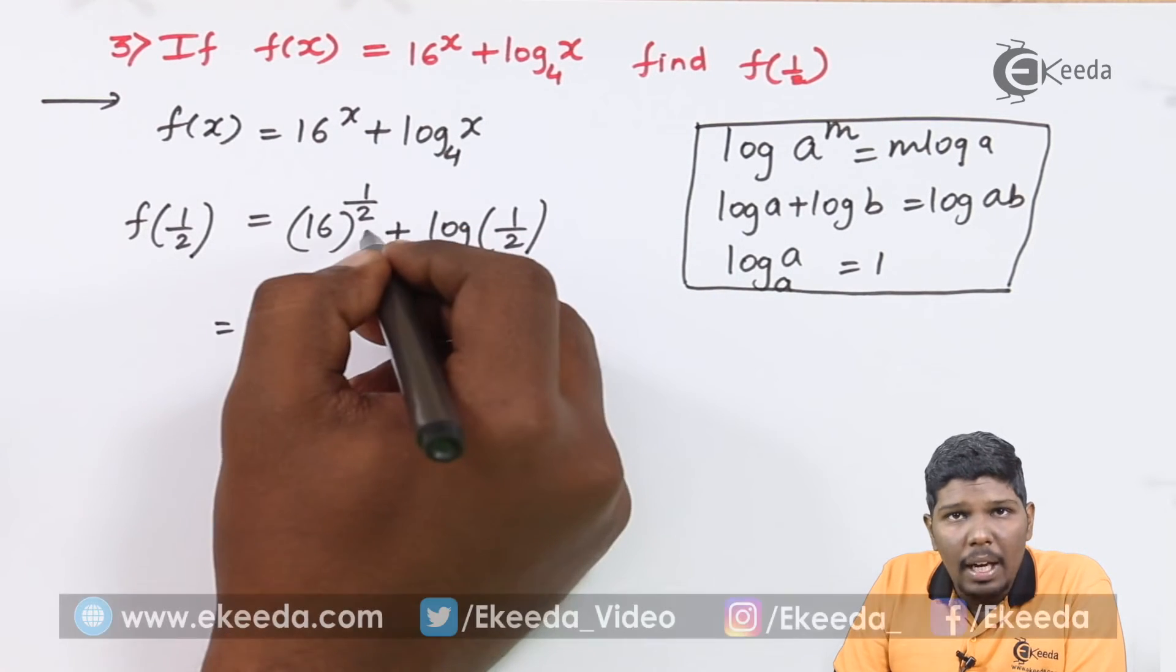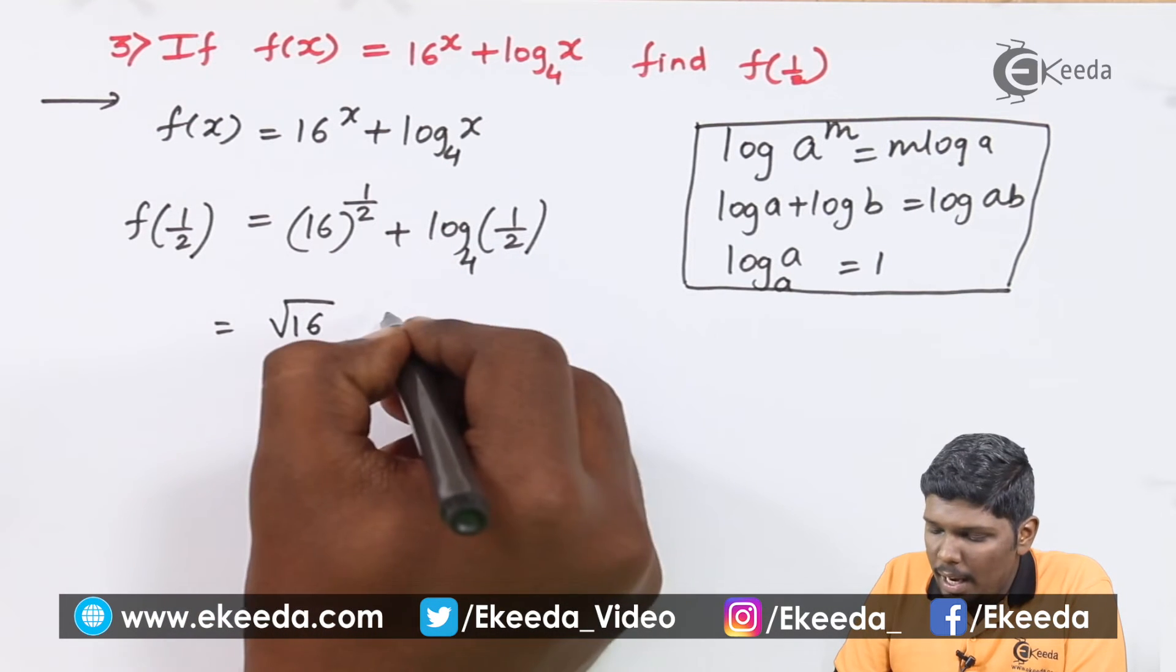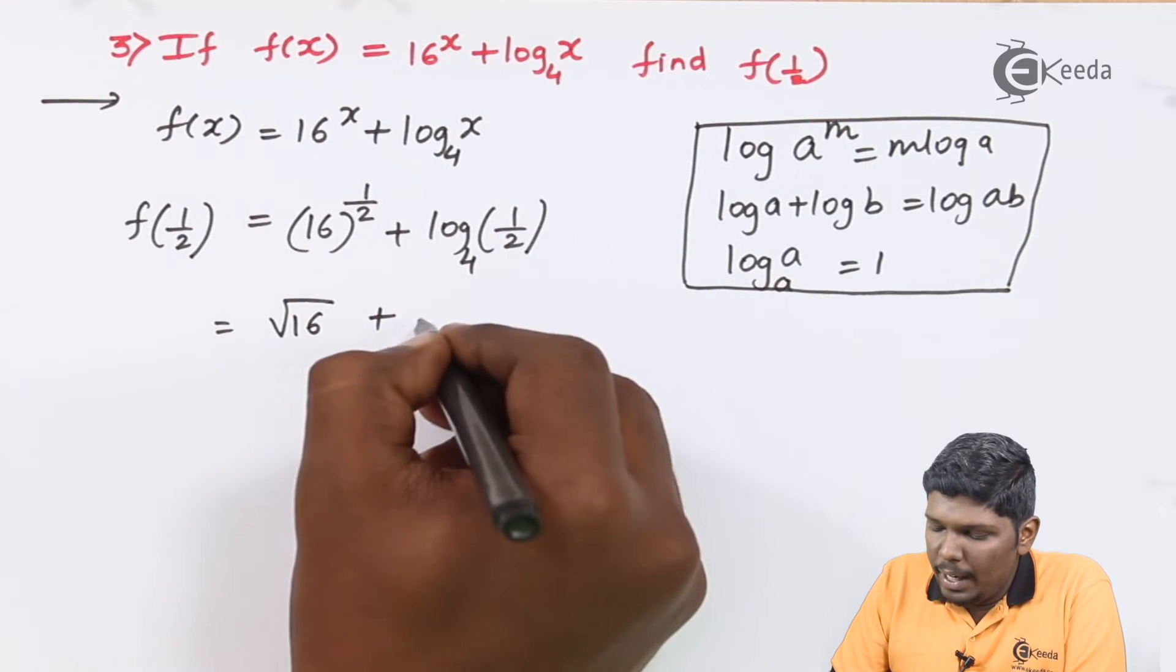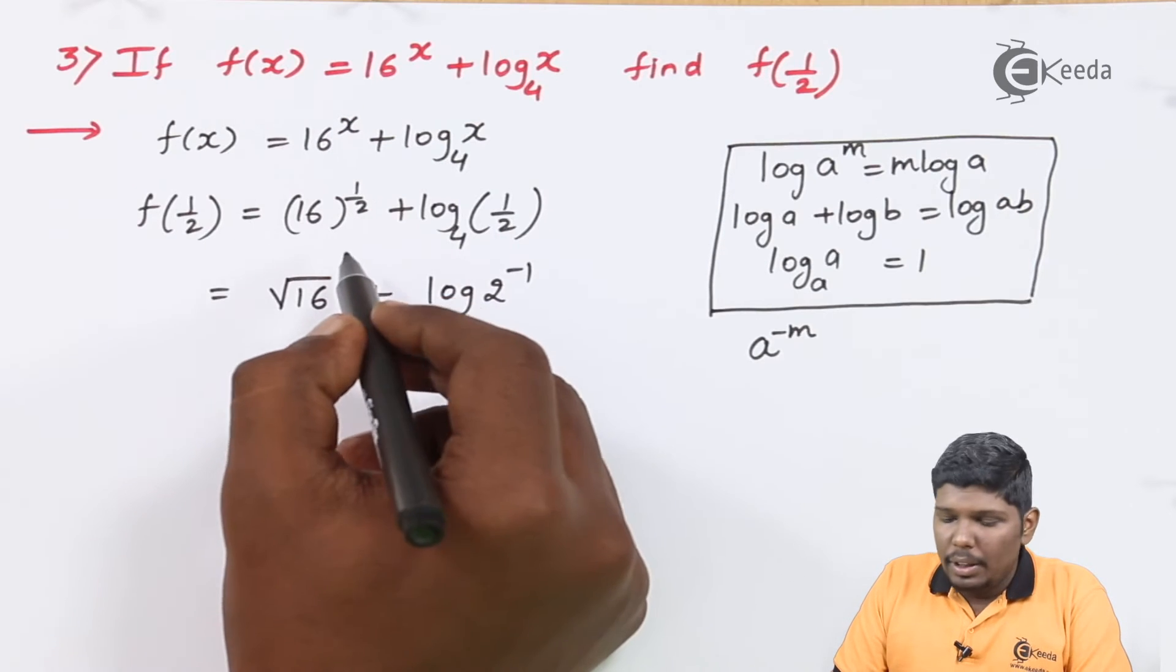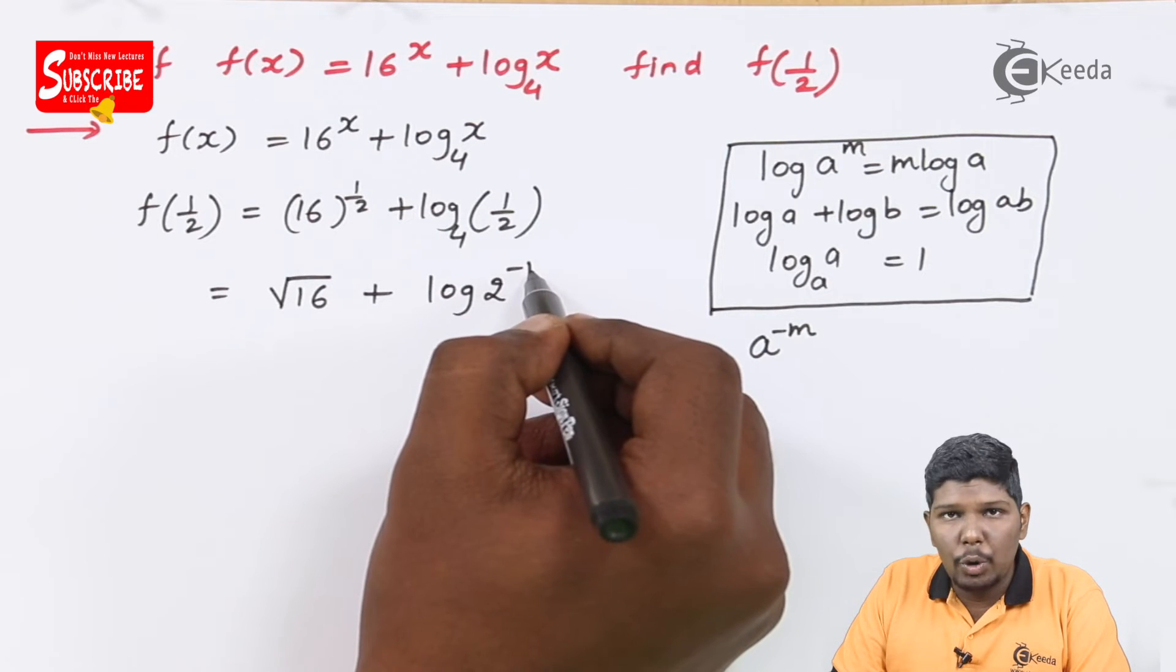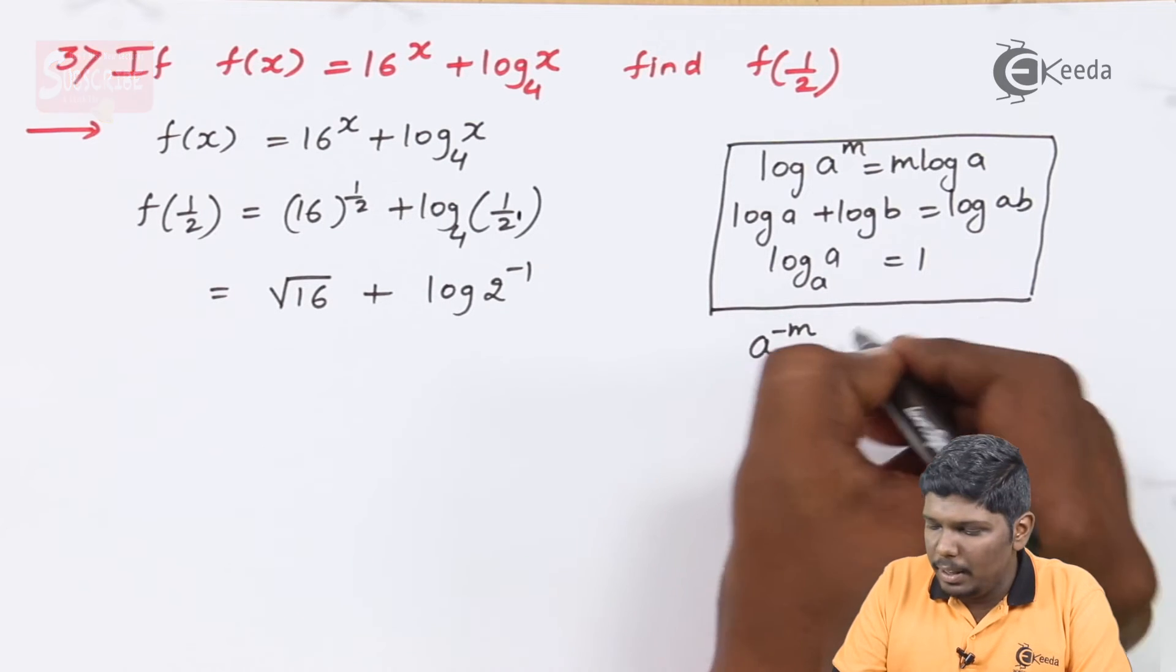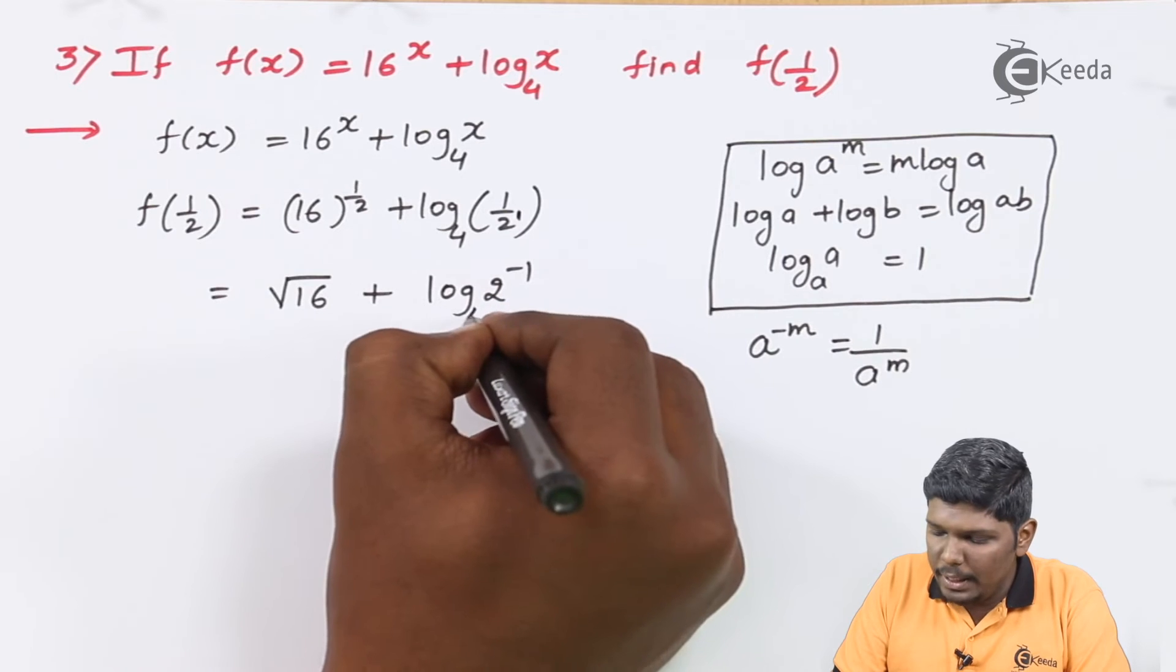Now, 16 raised to 1/2 is nothing but square root of 16. And to find log of 1/2 to the base 4, we can write 1/2 as 2 raised to minus 1. So 16 raised to 1/2 is square root of 16, plus we have written 1/2 as 2 raised to minus 1. Since a raised to minus m is nothing but 1 upon a raised to m, to the base 4.